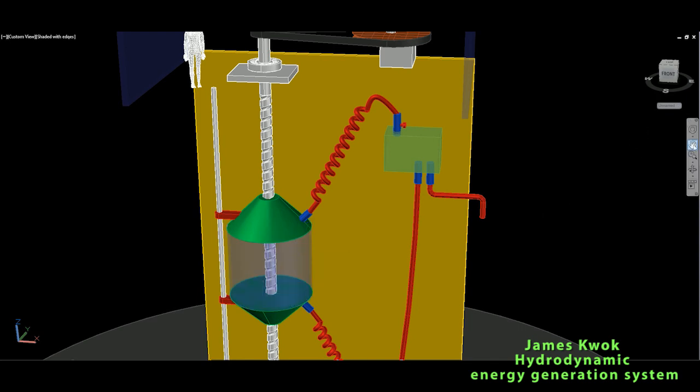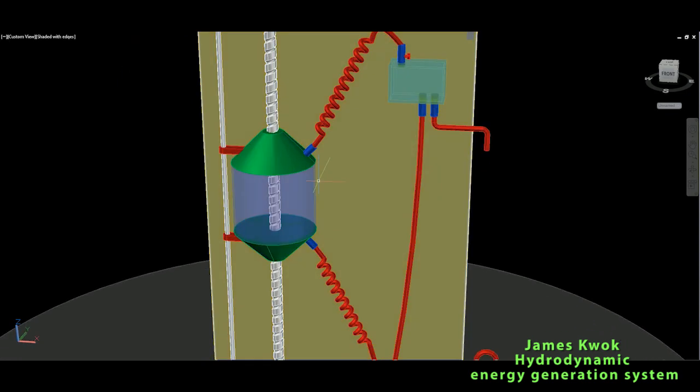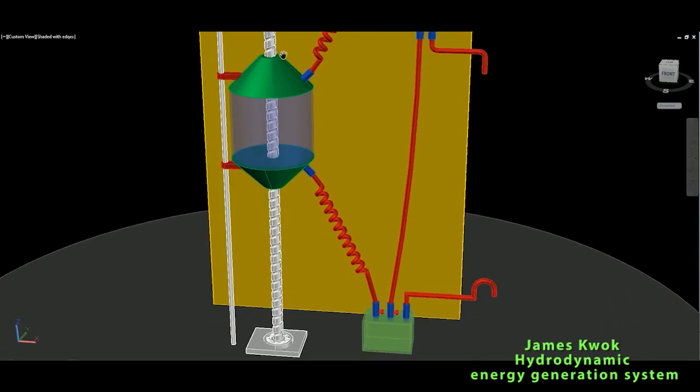When the buoy is empty of air, it will have density higher than the water and it will sink. This gravity force which is used from the sinking will actually help to spin and create free energy.